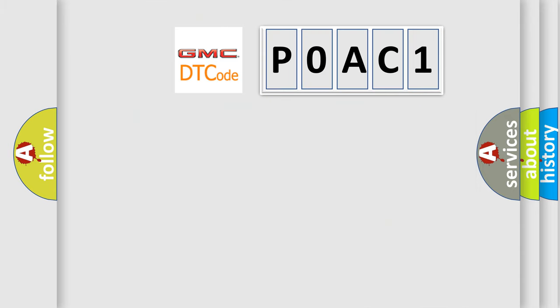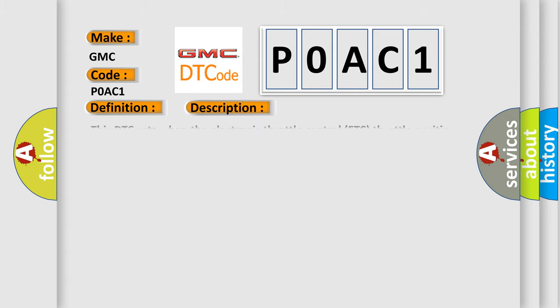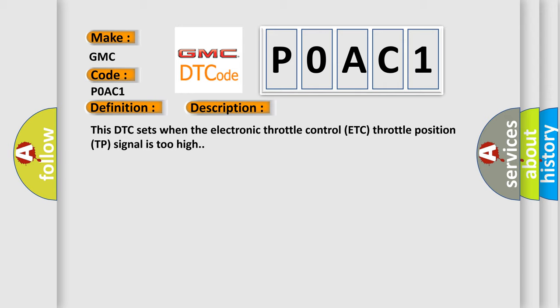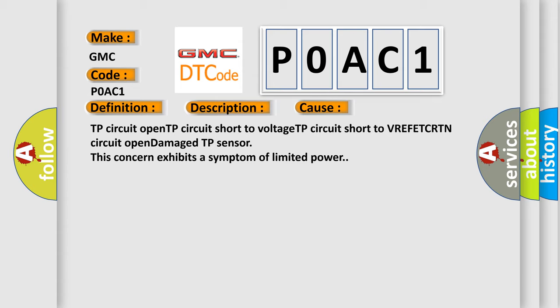So, what does the diagnostic trouble code P0AC1 interpret specifically for GMC car manufacturers? The basic definition is: Throttle or pedal position sensor or switch communication circuit high. This DTC sets when the electronic throttle control (ETC) throttle position (TP) signal is too high. This diagnostic error occurs most often in these cases: TP circuit open, TP circuit short to voltage, TP circuit short to VREF, ETC RTN circuit open, or damaged TP sensor. This concern exhibits a symptom of limited power.